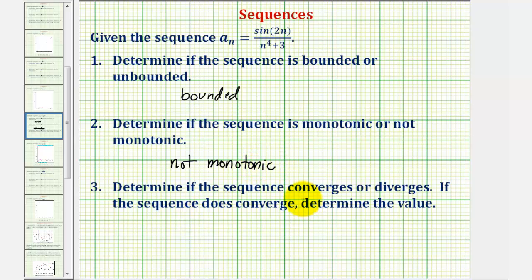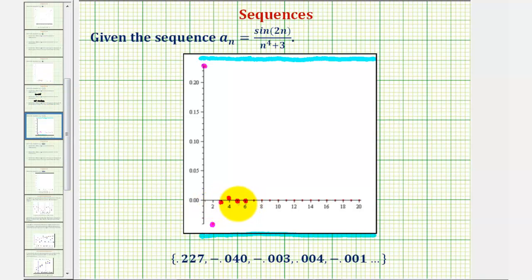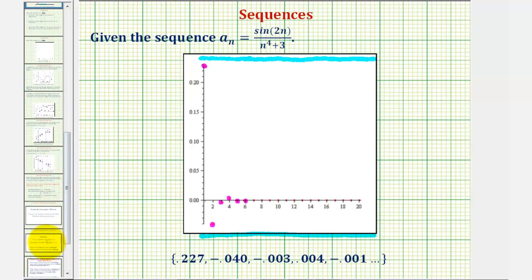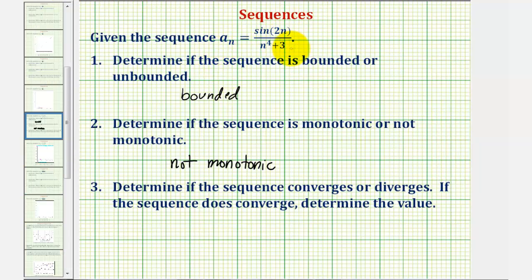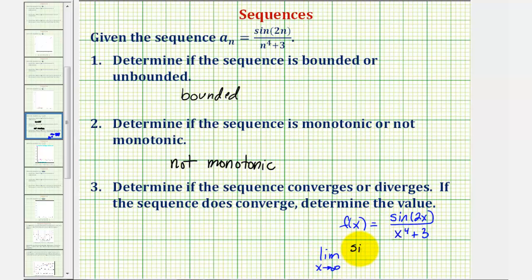Now we want to determine if the sequence converges or diverges, and if it converges, determine the value. Looking at the graph, the value of the terms are converging to zero. More formally, if a sub n equals f of n, and the limit as x approaches infinity of f of x equals L, then a sub n converges to L and the limit of the sequence is L. Sequences that have limits converge; sequences that don't have limits diverge. So we let f of x equal sine 2x divided by the quantity x to the fourth plus three, and take the limit as x approaches infinity.